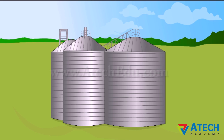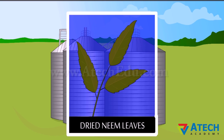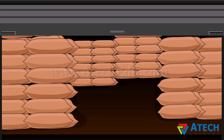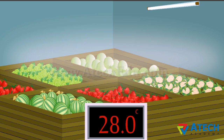Dried neem leaves are used for storing food grains at home. For storing large quantities of grains in big godowns, chemical treatments are required to protect them from pests and micro-organisms. Fruits and vegetables can be stored in refrigerated areas in a store, but the duration for which they can be stored is limited — they get rotten after some time.